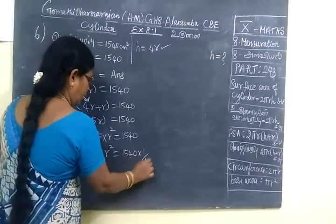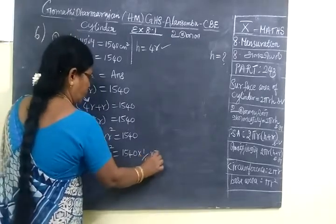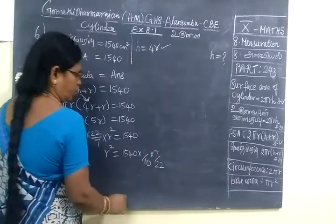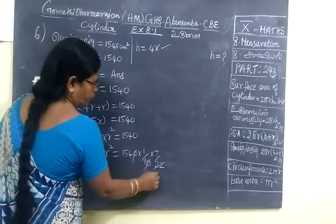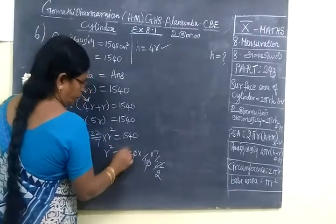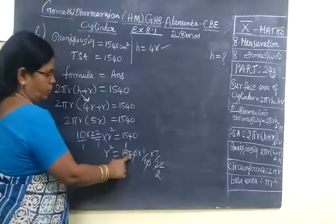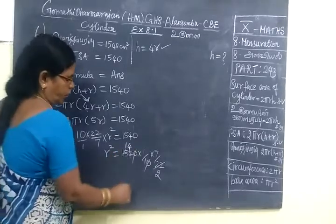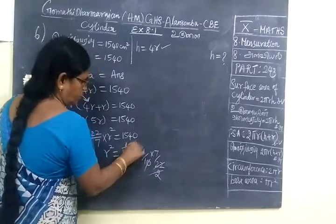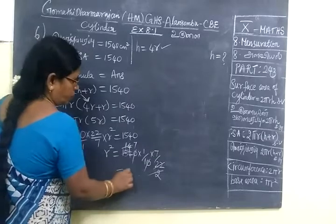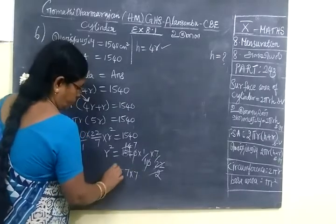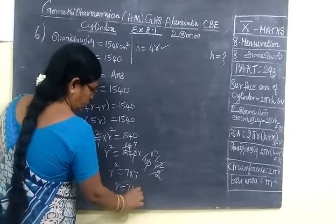divided by 10, times 7/22. Now cancel, take 11 table, 2 times here, 1 time, balance 4, 44. Then 4 times... 7 times. So 7 into 7, so R = 7 centimeters.